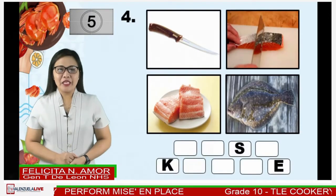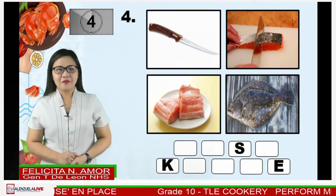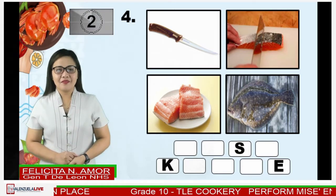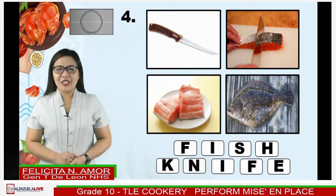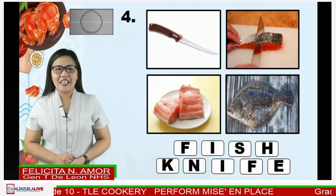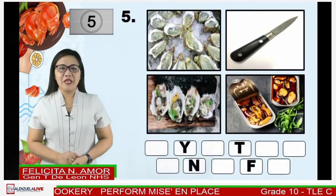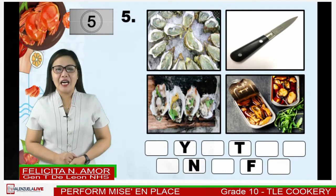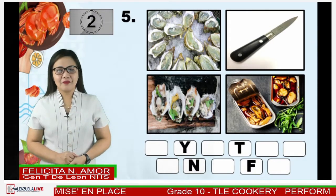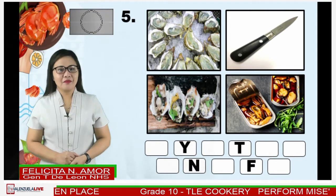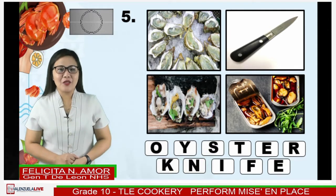Next, for number four — five seconds. The correct answer is fish knife. That's exactly right. Last, number five — your timer starts now. If your answer is shrimp deveiner, then you are correct.